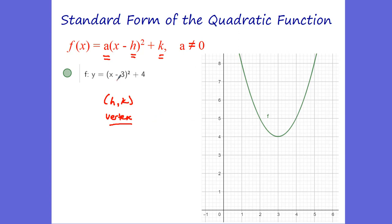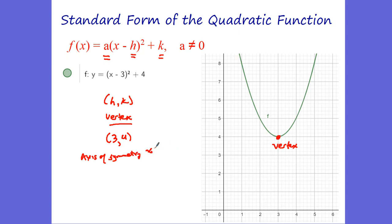In the function y equals x minus 3 squared plus 4, since there's a negative sign in the formula, our h value is equal to 3 and our k value is equal to 4. So you can see the vertex is at the point 3, 4. Our axis of symmetry is going to be at x equals h, so x equals 3 is our axis of symmetry.